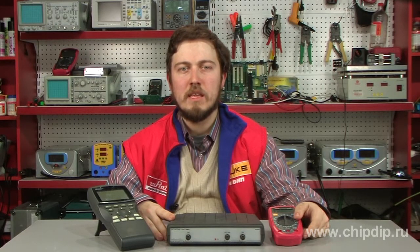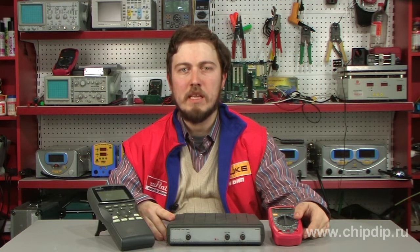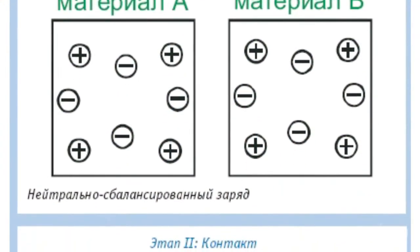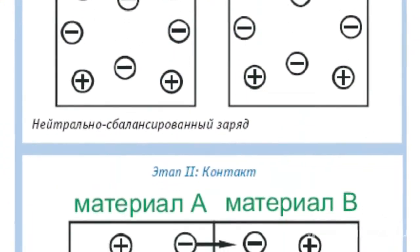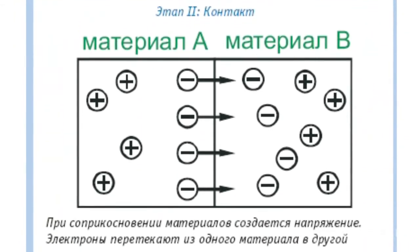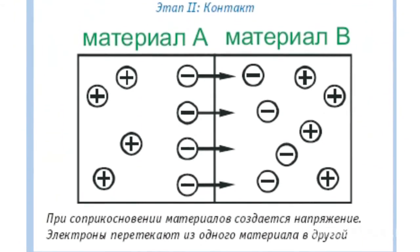Triboelectricity is a phenomenon of electric charges appearing under friction. It is the result of friction between two insulators, semiconductors, or metals of different or the same chemical composition but different density.